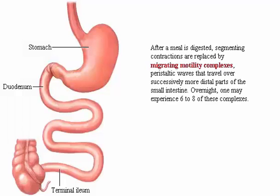After a meal is digested, segmenting contractions are replaced by migrating motility complexes — peristaltic waves that travel over successively more distal parts of the small intestine. Overnight, one may experience six to eight of these complexes.